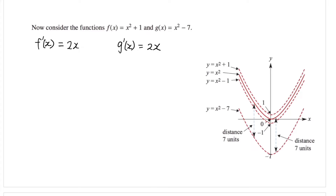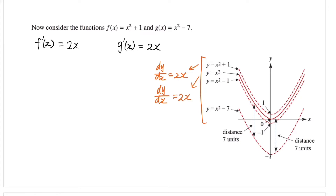If you have a look at this graph, all these functions listed here have derivative 2x, because when deriving, the constant terms disappear. So this graph shows several antiderivatives of 2x. We can put any constant number as the second term in our function and the derivatives will always be the same. For the first function, dy/dx = 2x, and for the second one, even without a constant term, we get the same derivative. That minus 1 term disappears. So they all have the same derivative function, although the original functions are different.